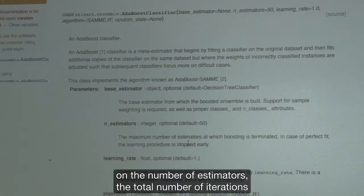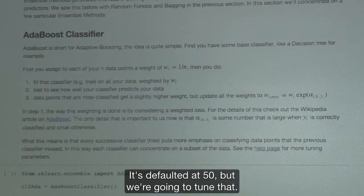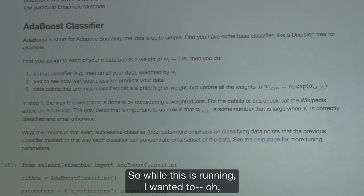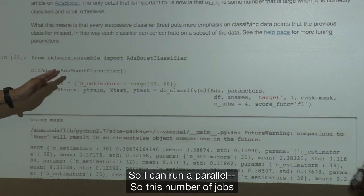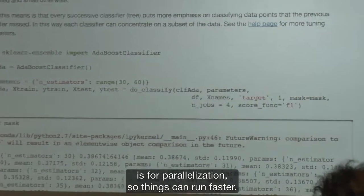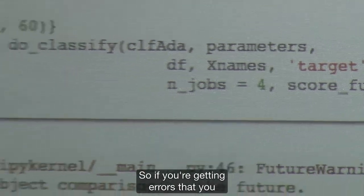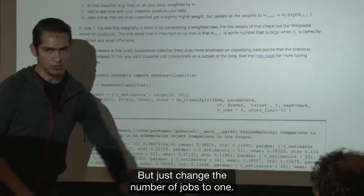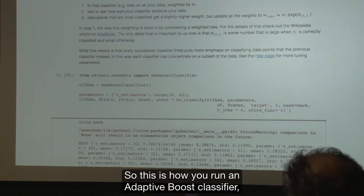There are a lot of tuning parameters as well. We're going to concentrate mostly on the number of estimators, the total number of iterations we go through this algorithm. It's defaulted at 50, but we're going to tune that. I wanted to mention this number of jobs thing. So this number of jobs is for parallelization, so things can run faster. So on some computers it doesn't work, and on some computers it does. So if you're getting errors that you don't see me getting, just change the number of jobs to one.